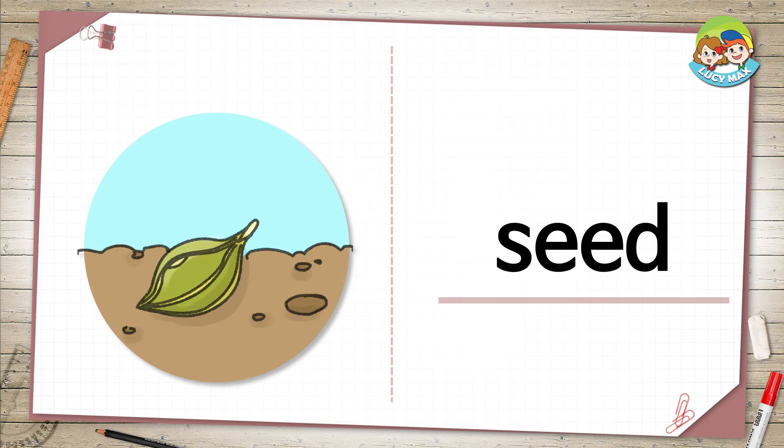Seed. The green thing on the ground is a seed. Some kind of plant grows from the seed. If the seed is a flower seed, it will be a flower.